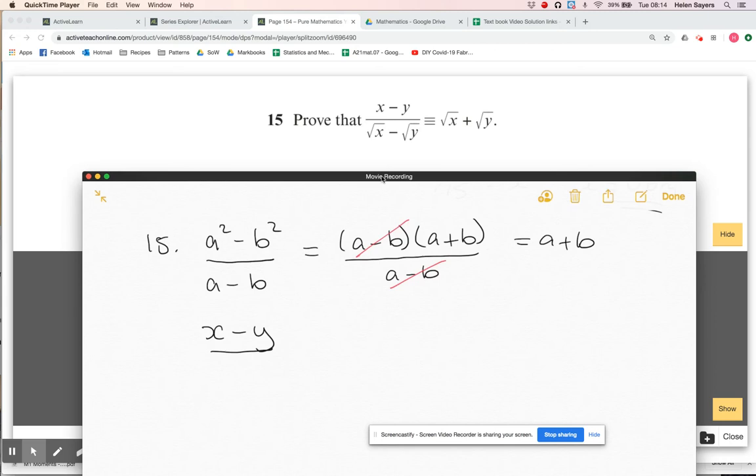So on the one I did, I had, sorry, let's finish writing this out before I start. Okay, so this is the question that they've given us, right? So on the one I did, I had a and a squared. And on the one they've given us, we've got root x and x, but the relationship there is still the same. x is root x squared, and then root y, so y is root y squared.